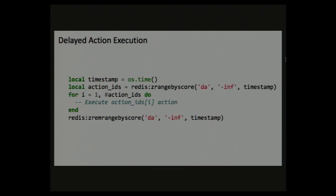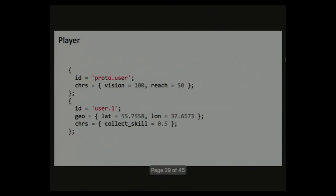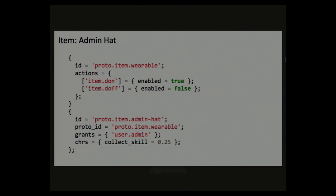One interesting thing in Redis is that using sorted sets you can implement delayed action execution — you don't need any kind of cron. On each query to your server, check if there are any actions to be executed by this time and execute them. In production you will have to limit this by the number of actions to execute right now, but for the prototype it works.